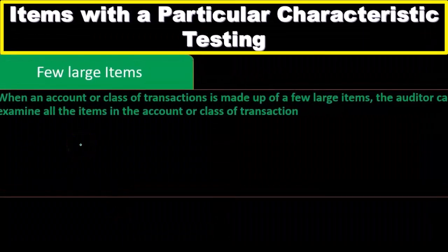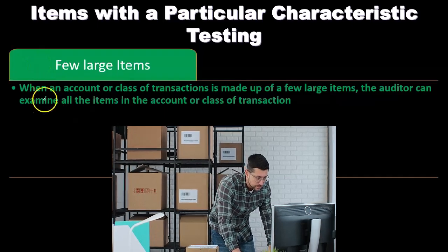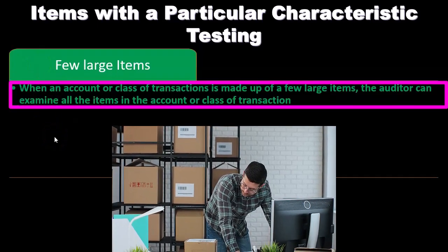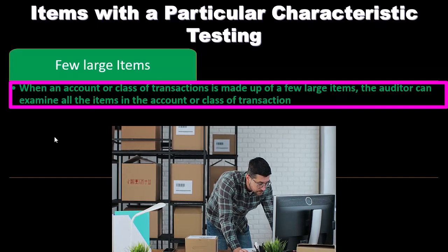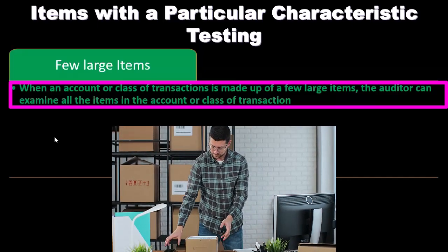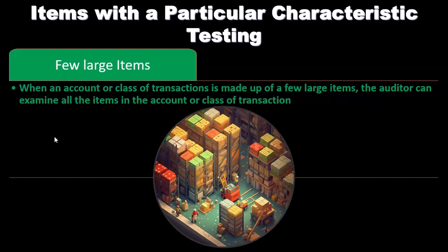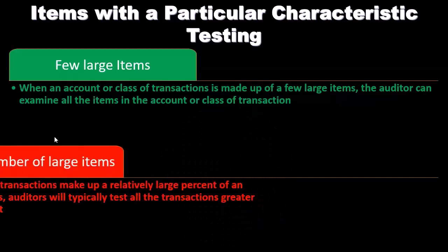Now we're going to talk about testing items with a particular characteristic. We can have a few different scenarios. One: we can have a few large items that we're testing. When an account or class of transactions is made up of a few large items, the auditor can examine all the items in the account. So if we only have a few things and they're large — for example, property, plant and equipment with only a few large purchases — we can go through and say we don't need to take a sample; we're going to look at all of them.